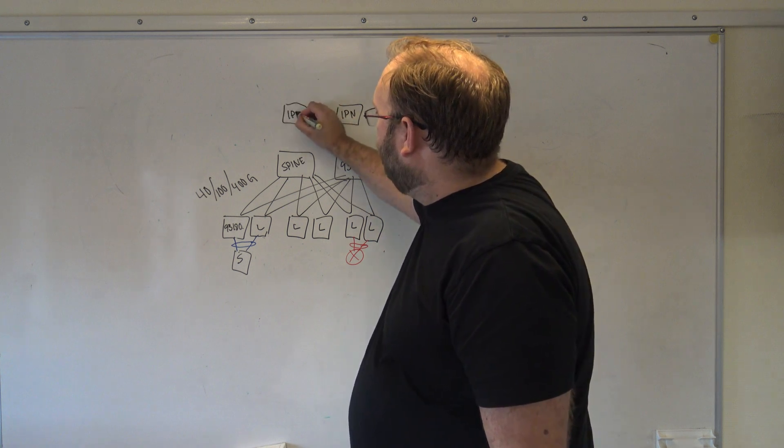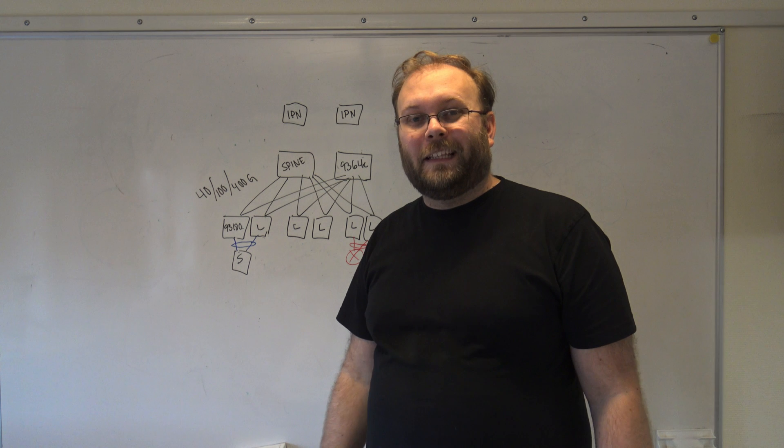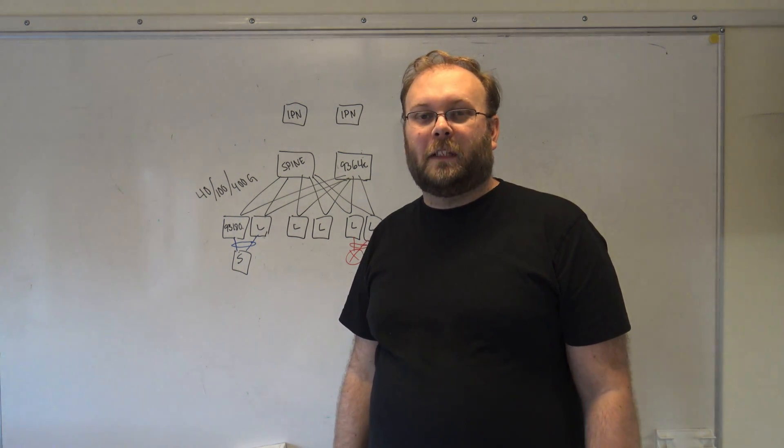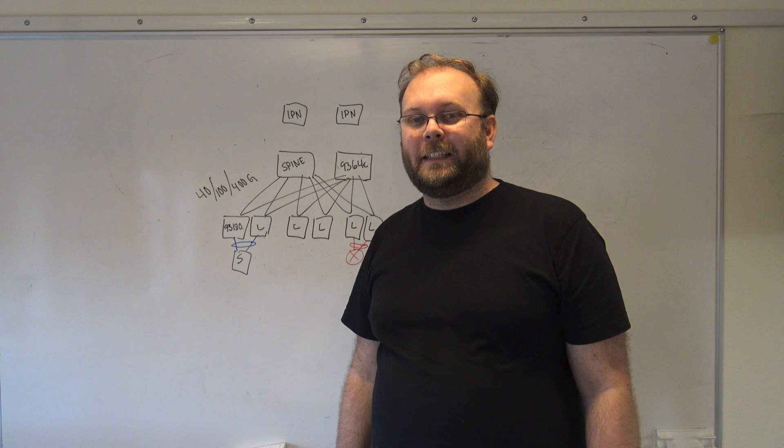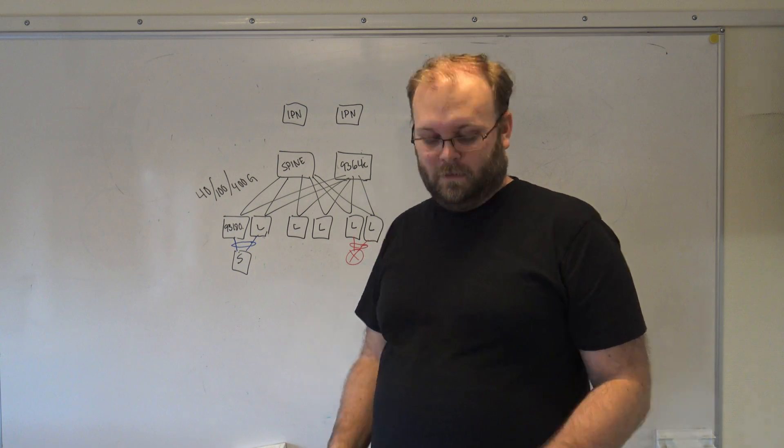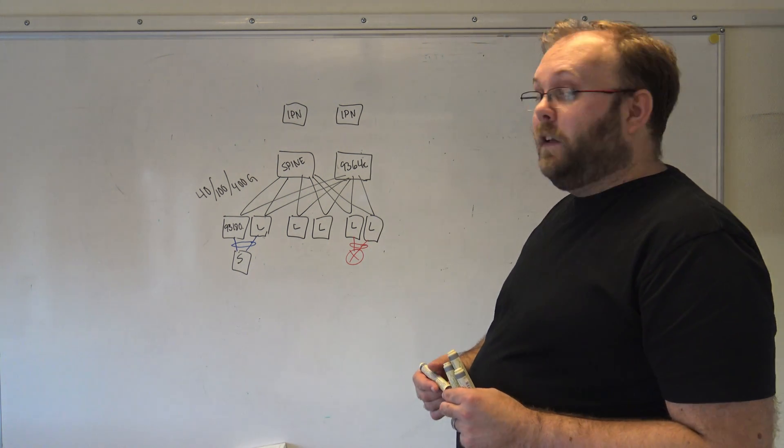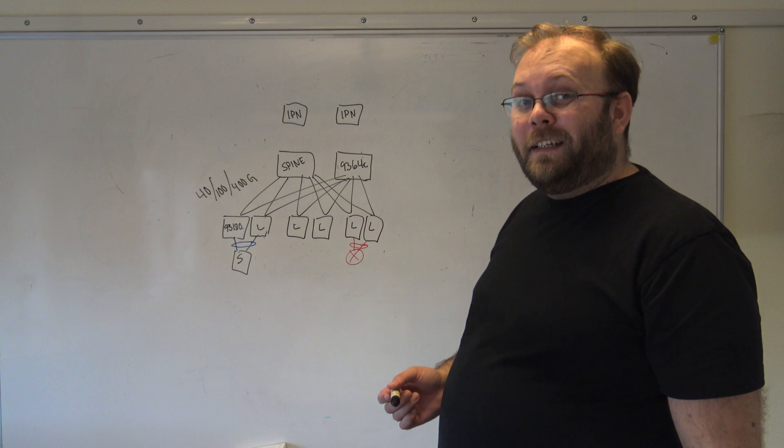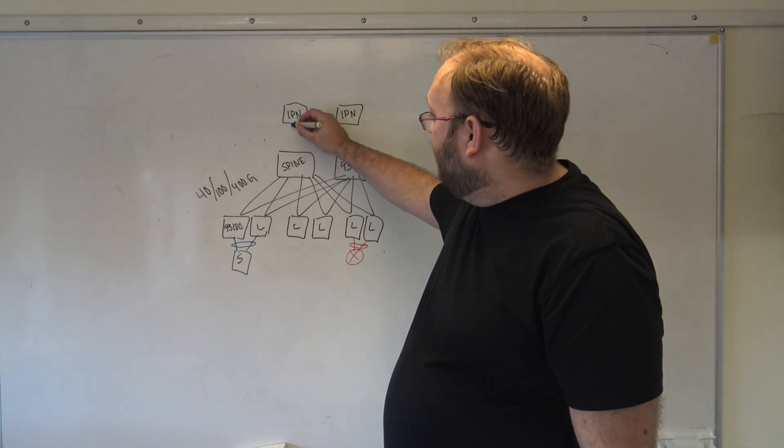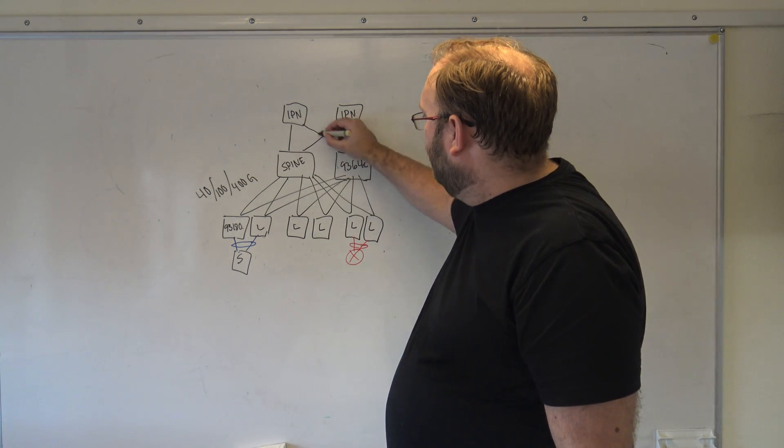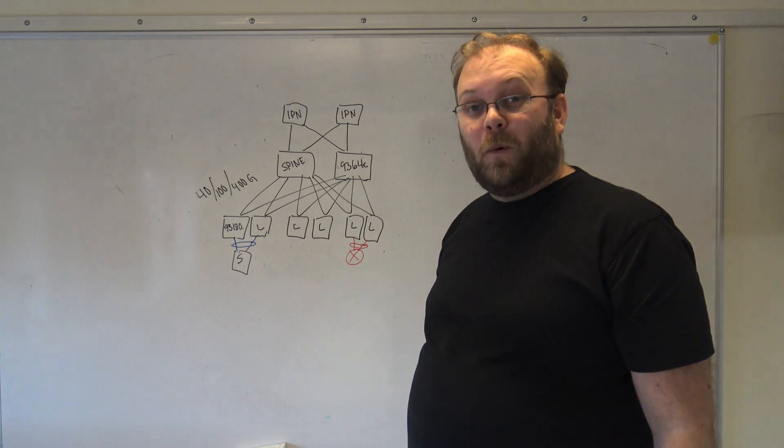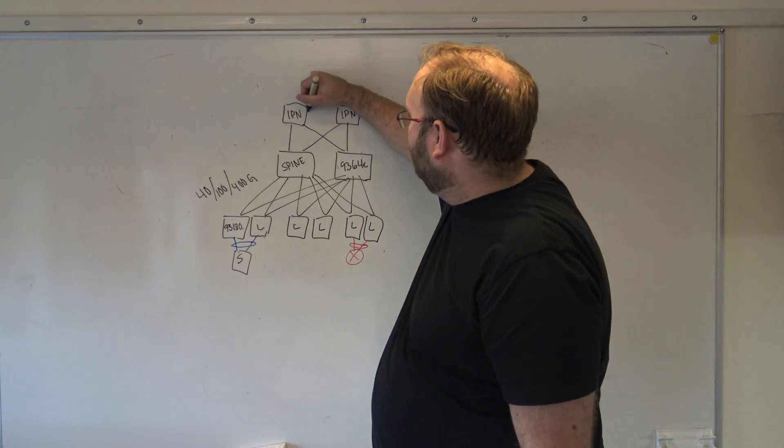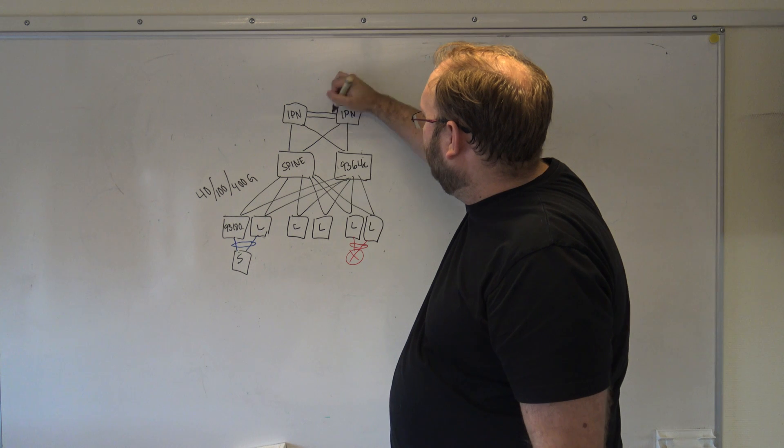And IPN network stands for interpod network, so it can be DCI as well and then it's the data center interconnect. So if you have this IPN network or DCI you connect them to the spine. Normally you connect them fully redundant and you also have two links here.